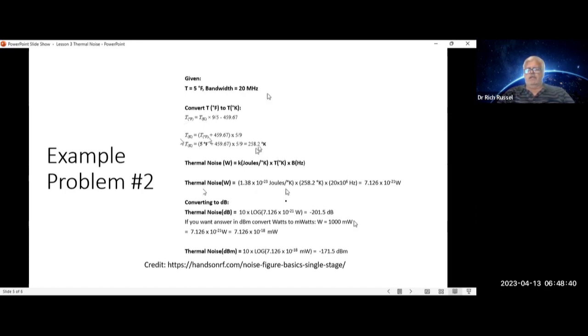If you plug all that into the equation, including your 20 times 10 to the 6 Hertz, which is your 20 megahertz, that gives you 7.126 times 10 to the minus 21 watts. Just convert that to dB, and you get minus 201.5 dB.